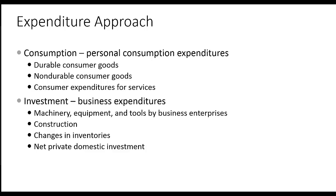To calculate GDP using the expenditure approach, we add up all spending on final goods and services that has taken place during the year. We break that spending down into four basic categories: consumption spending, investment spending, government spending, and net export spending. Beginning with consumption, think of this as the spending by individuals and families. Consumption is broken down into three categories: durable goods, non-durable goods, and services.